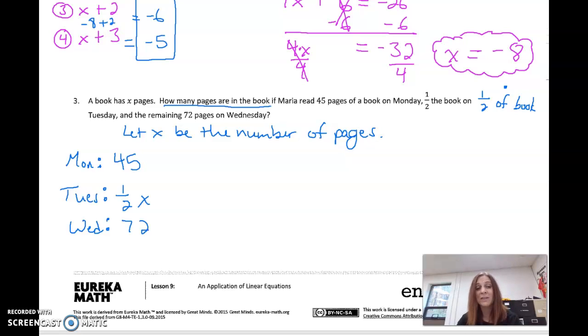Monday, she read 45. Tuesday, she read half the book. Wednesday, she read 72. So we know this is how much she read all three days, right? She read 45 pages. She read half the book, half the number of pages in the book on Tuesday and 72. What does it equal? Well, what she read on Monday, what she read on Tuesday, what she read on Wednesday, has to equal how many pages in the book.